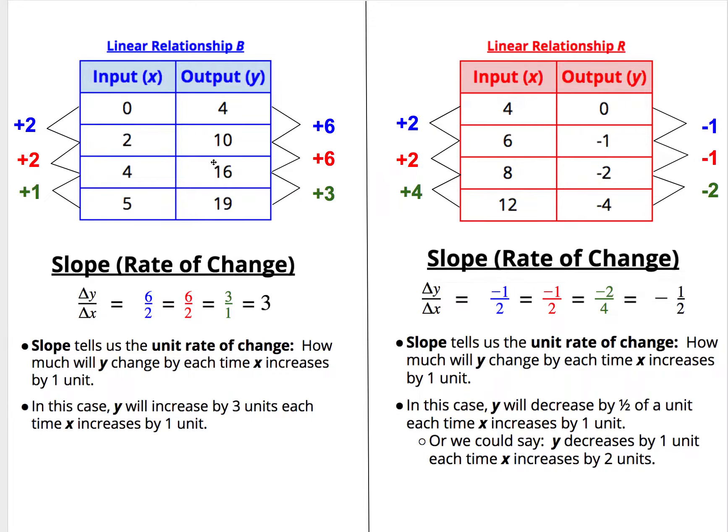The final row, row three to row four, shows us y will go from sixteen to nineteen, or increase by three units, while the x will go from four to five, or increase by one unit. That could be written as a slope of three over one.